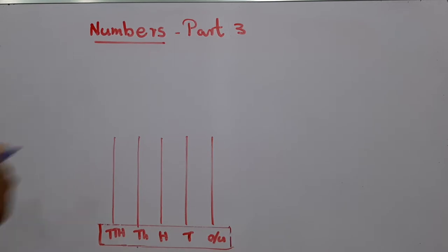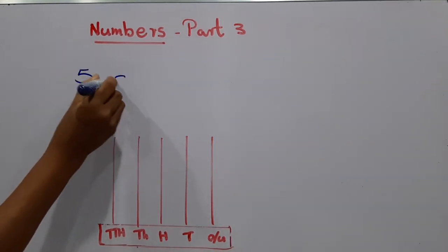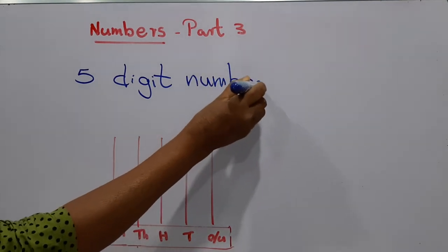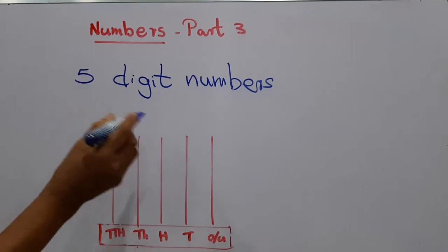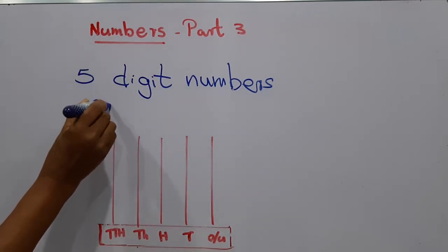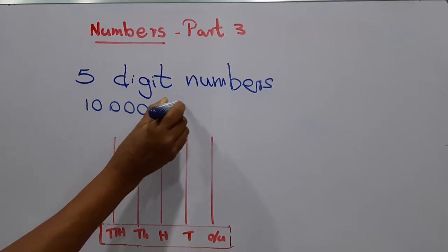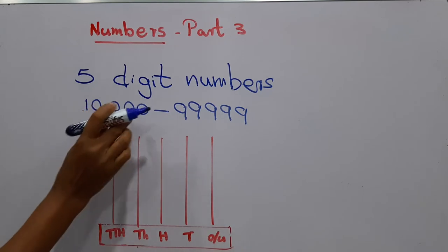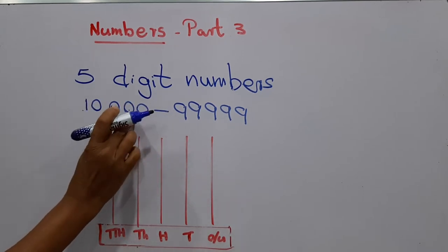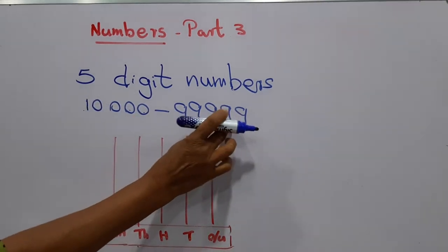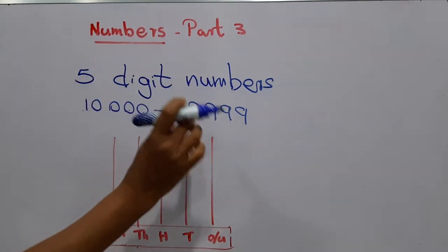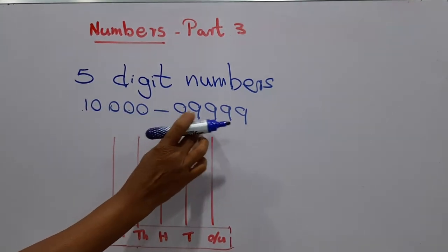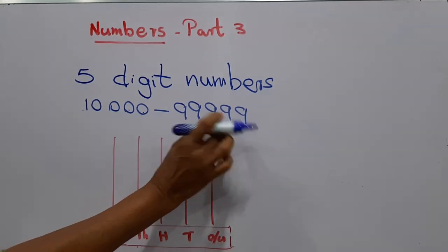Today we are going to learn about five-digit numbers. Under five-digit numbers, our earlier lesson covered ten thousand to ninety-nine thousand nine hundred and ninety-nine. A five-digit number has five places: ones, tens, hundreds, thousands, and ten-thousands. Ten thousand is the smallest number and ninety-nine thousand nine hundred and ninety-nine is the biggest number.